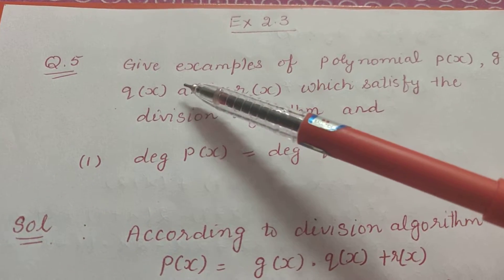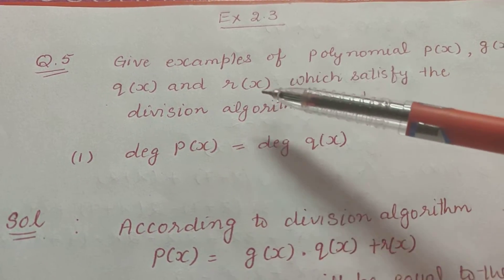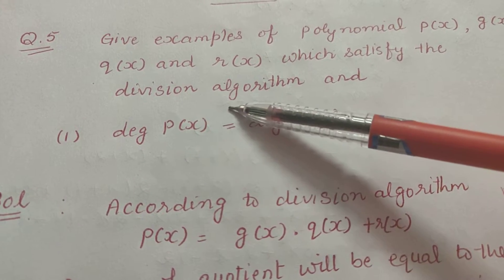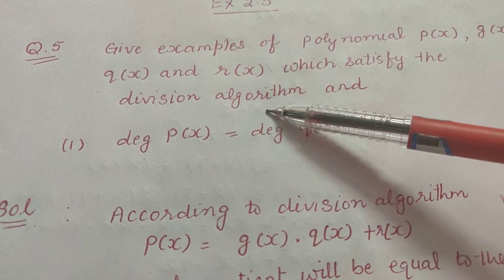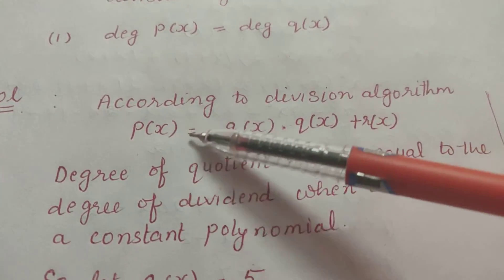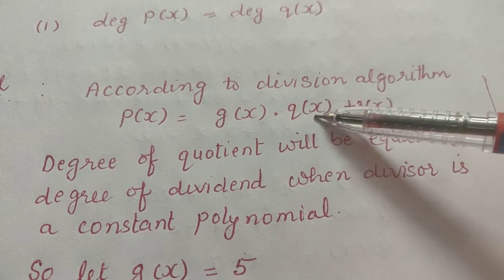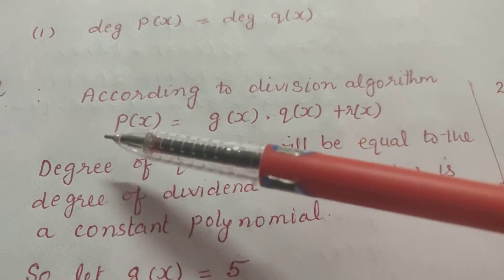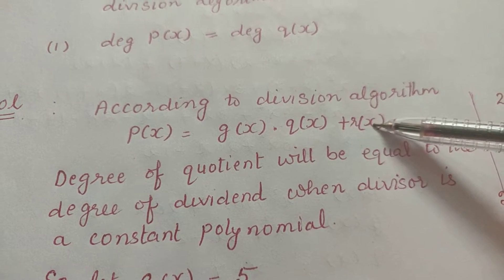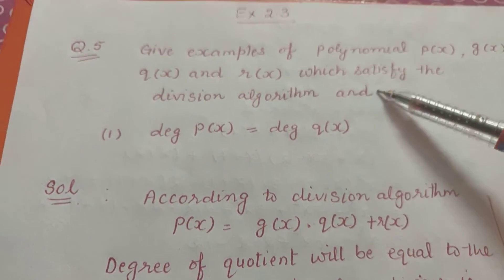These four polynomials — p(x), g(x), q(x), and r(x) — must satisfy the division algorithm. The division algorithm states that p(x) = g(x) · q(x) + r(x), that is, dividend equals divisor times quotient plus remainder.